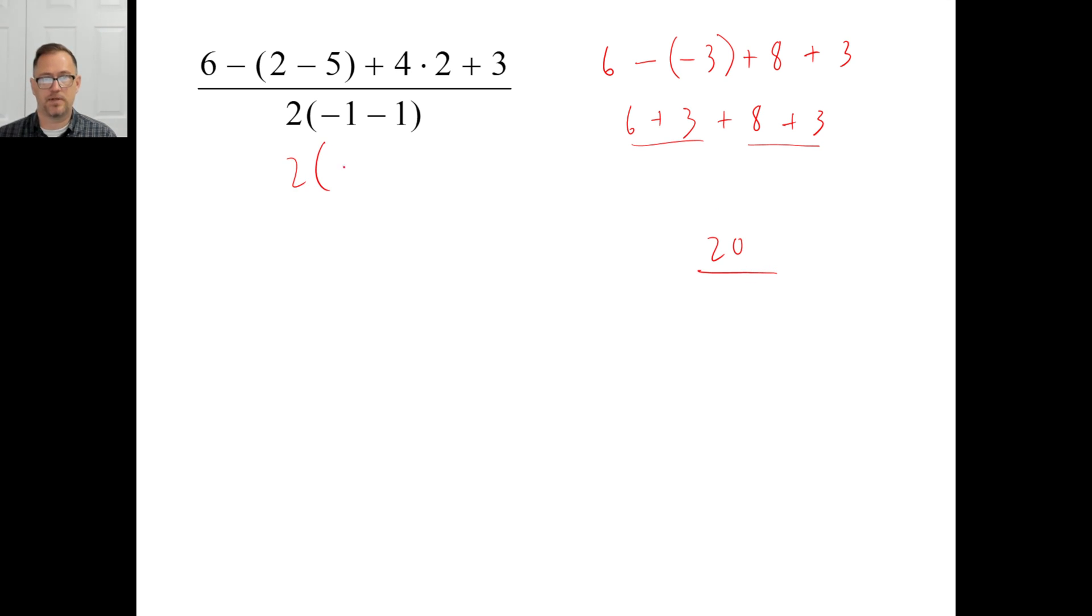Let's do the bottom. Two times negative one minus one is negative two. So two times negative two is negative four. So we know the answer immediately. Boom. Negative five.